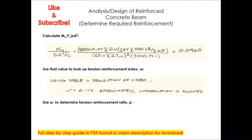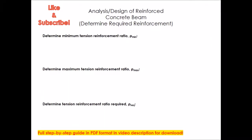The next thing you want to do is take your tension reinforcement index ω and determine the reinforcement ratio ρ. You do that by taking ω, multiplying by f'c, and dividing by fy. As you can see, we get a reinforcement ratio ρ of 0.0057.